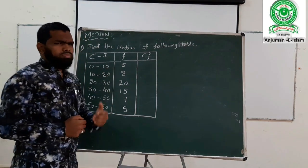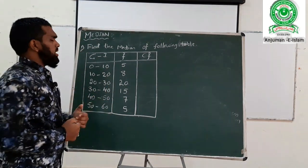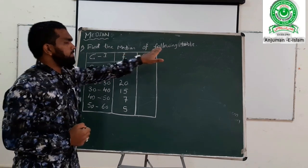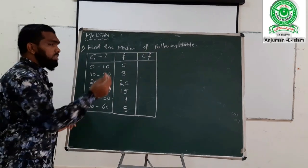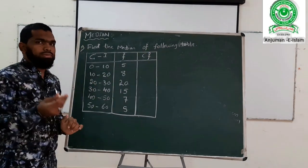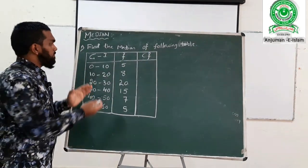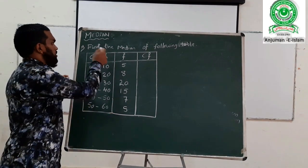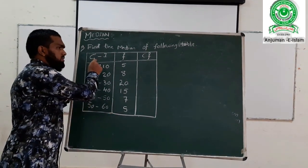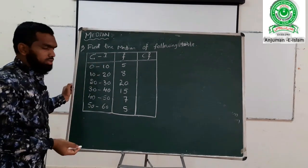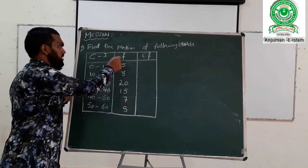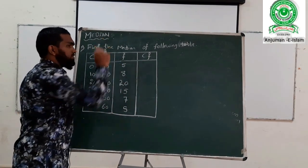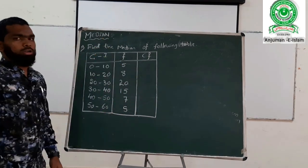Suppose, in the question statement: find the median of the following table. That is the given question. Here, CI represents class interval, F represents frequency, and CF represents the cumulative frequency.